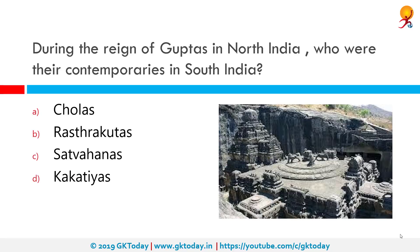During the reign of the Guptas in north India, who were their contemporaries in south India? Their contemporaries were the Rashtrakutas. The Rashtrakuta was a royal dynasty ruling large parts of the Indian subcontinent between the 6th and 10th centuries. The earliest known Rashtrakuta inscription is a 7th century copper plate grant detailing the rule from Manapoda, a city in central or west India.